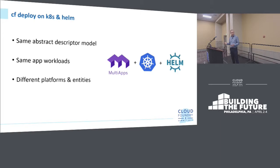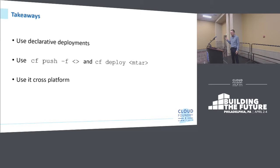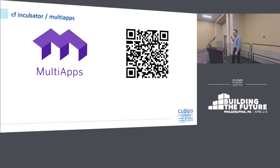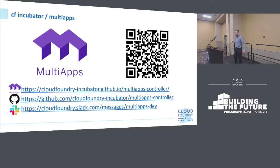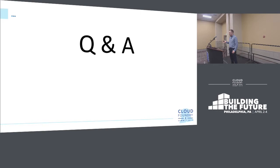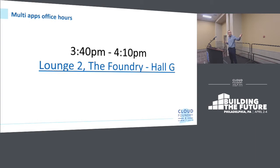To wrap up about Kubernetes: we use the same abstract descriptor model, the same application workloads, and deploy them on a different platform with different entities. My overall message is: use declarative deployments — use CF Push where appropriate, use CF Deploy where you have the case, and do it cross-platform. If you'd like to know more about the MultiApps project, the QR code leads to our homepage, you can find us on GitHub, and reach us on Slack with any questions. There are office hours right after the break.